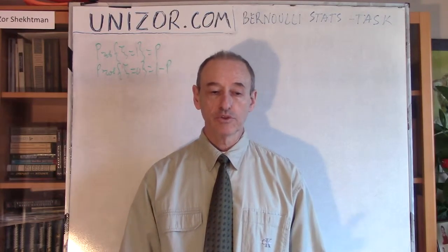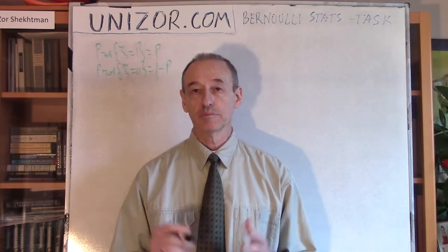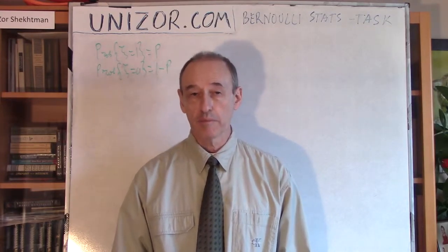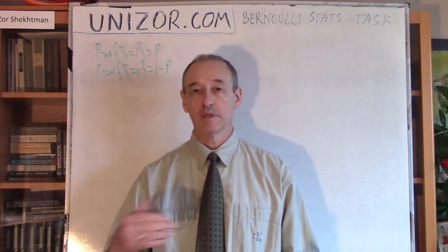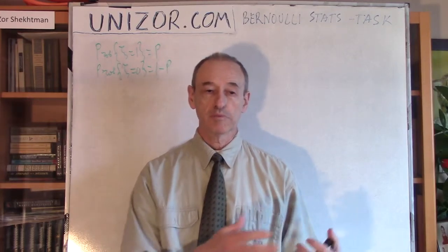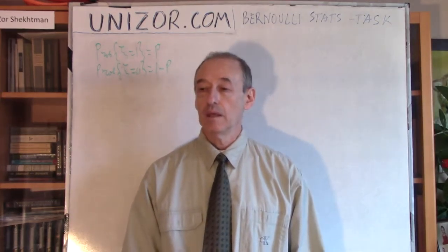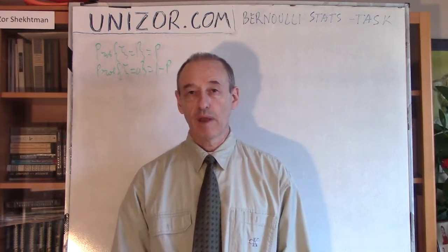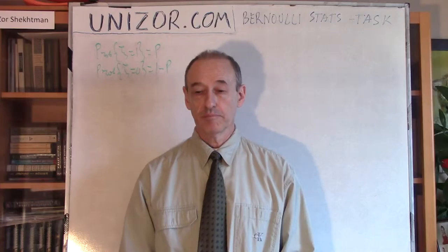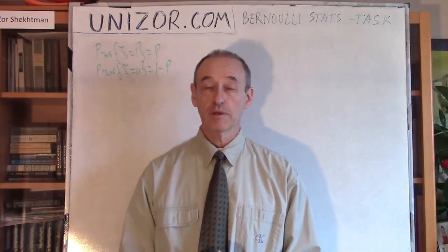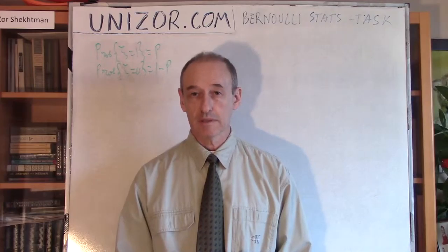I would like to talk about the simplest possible random variable. We're talking about a Bernoulli random variable, a Bernoulli experiment. Let's say we're tossing a coin or doing something similar. So it's an experiment which has two results. One of them has certain probability and another the opposite probability. One is probability p, from zero to one, and the opposite event is one minus p. And we would like to evaluate the distribution of probabilities of this random variable based on certain results in the past.